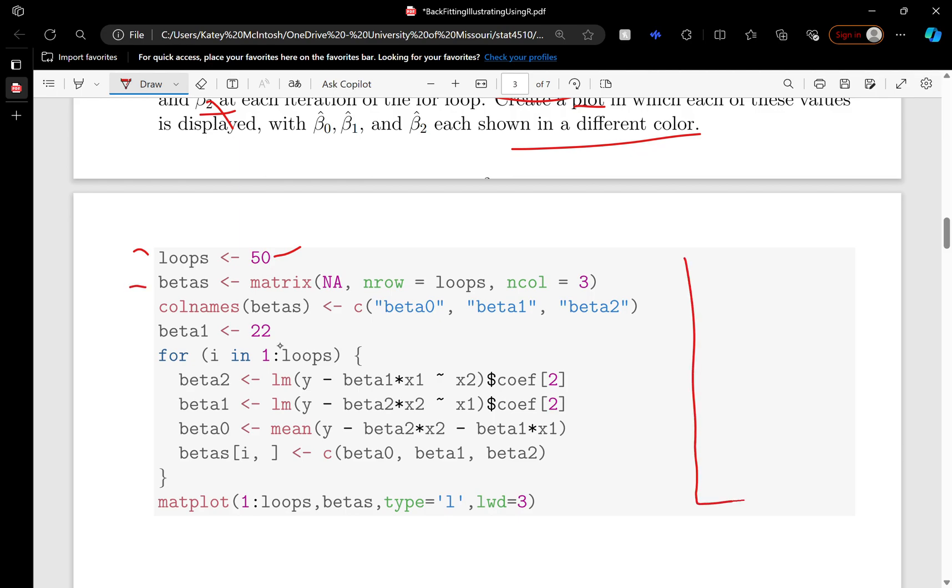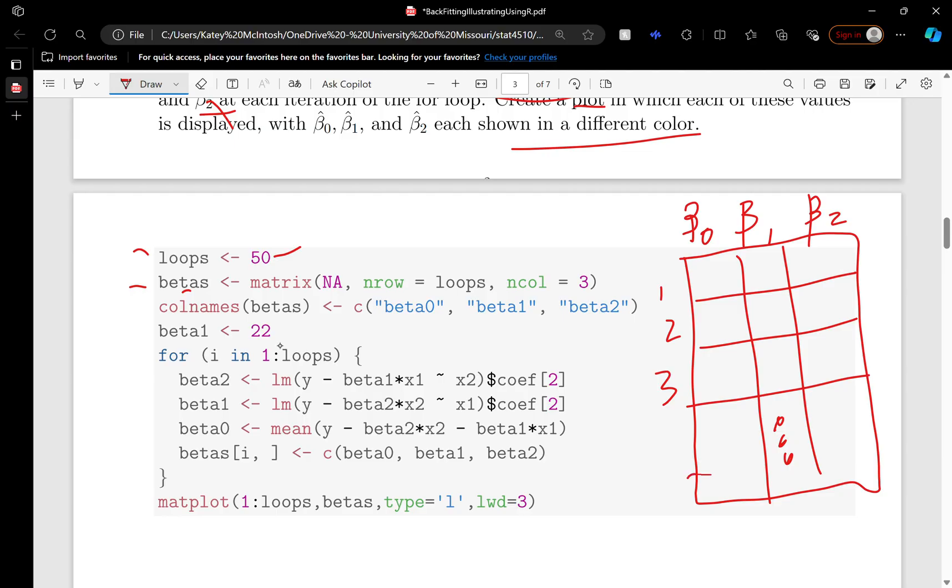I create a matrix which I'm going to call betas. There are three columns: beta 0, beta 1, beta 2. Then there's first iteration, second iteration, third iteration, all the way to—in this example—50. I named the columns. I initialized beta 1, so I'm going to put a circle there because that's just our initial guess.